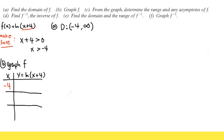Plugging negative 4 into x, we get ln of negative 4 plus 4, which is ln of 0. What's ln of 0? It's undefined — log of any base cannot have a 0 inside. But this gives us important information: whenever we end up with ln of 0, this tells us we will have a vertical asymptote on the graph.